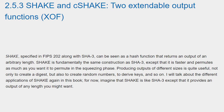SHAKE, specified in FIPS 202 along with SHA-3, can be seen as a hash function that returns an output of an arbitrary length. SHAKE is fundamentally the same construction as SHA-3, except that it is faster and permutes as much as you want it to in the squeezing phase. Producing outputs of different sizes is quite useful — not only to create a digest, but also to create random numbers, derive keys, and so on. Essentially, SHAKE is like SHA-3 except that it provides an output of any length you might want.